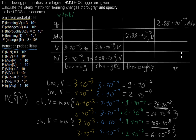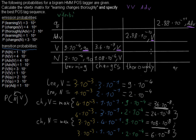Now I can retrieve the best part-of-speech sequence. At the end there is only one entry, so I follow the markers back: the end comes from the adverb entry, the adverb row says it came from the verb entry, the verb entry says it came from the previous verb entry, and that tells me it came from the beginning of the sequence. So the best part-of-speech tag sequence for these words — based on these probabilities, which may not reflect real text statistics — is: verb, verb, adverb. Thank you for watching.